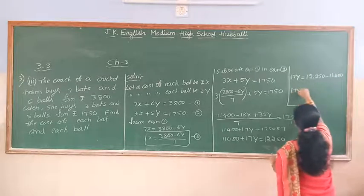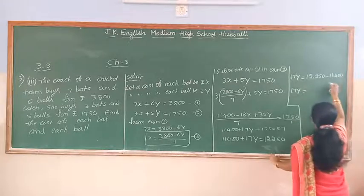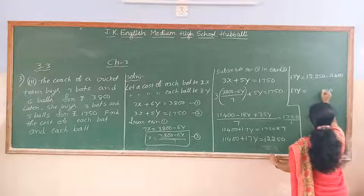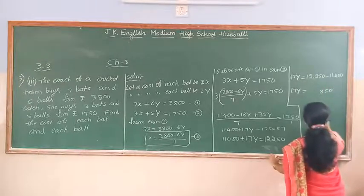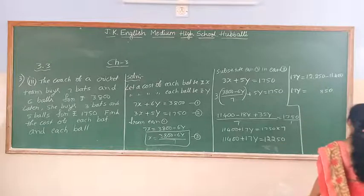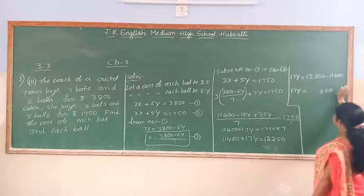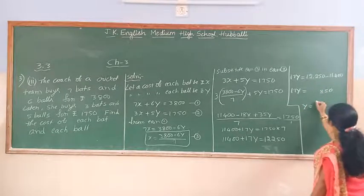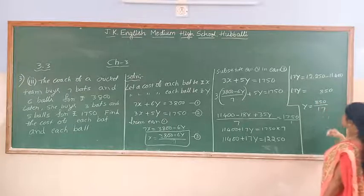Now I have to find out Y. So 17Y equals 12,250 minus 11,400. 17Y equals, subtract, 0 minus 0 is 0, 5 minus 0 is 5, 12 minus 4 is 8. So then 850.